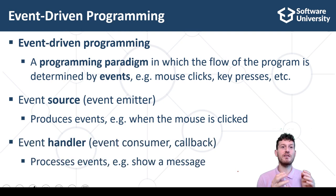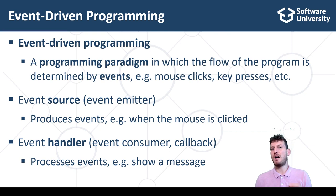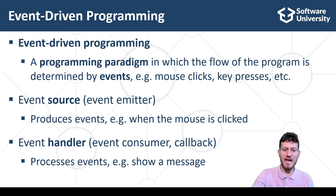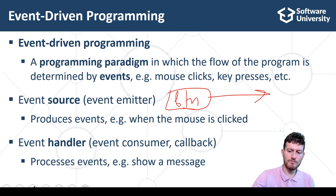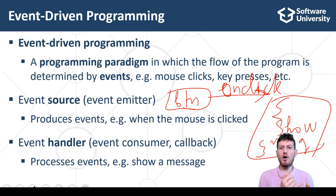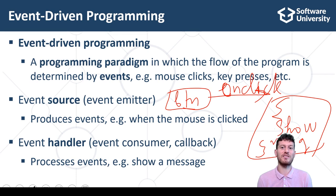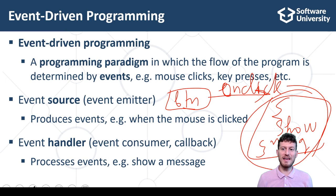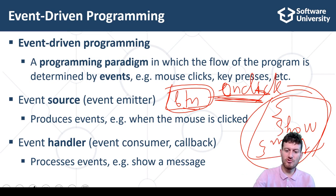An event handler, or event consumer, is a piece of code or callback function written by developers to handle or process an event. A simple example is to show a message when a button is clicked. The button is an event emitter — it has an onclick event which can be handled by developers. To handle the event, developers write an event handling function and assign it to the onclick event. When the button is clicked, the framework emits the onclick event, and the event handling function handles it and shows a message.